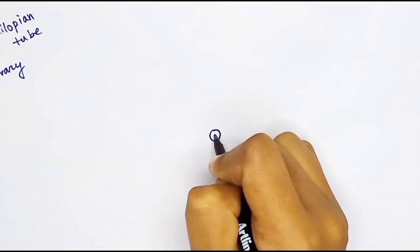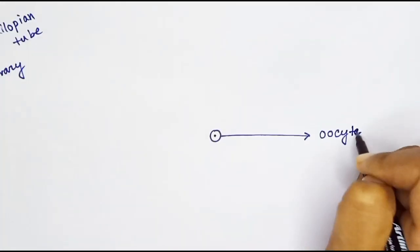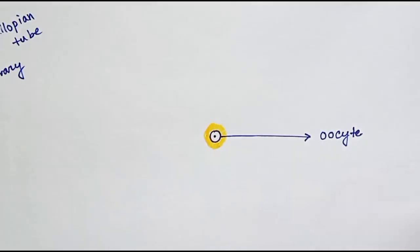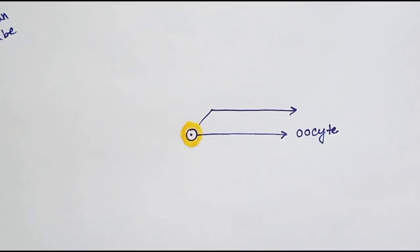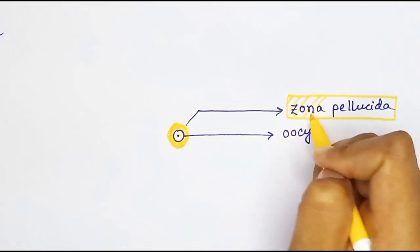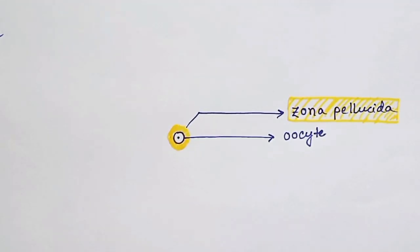In the ovary, the most mature follicle which contains the ovum is the Graafian follicle. At the center of the Graafian follicle, there is the oocyte, or what we call the ovum, which is surrounded by a layer called zona pellucida.